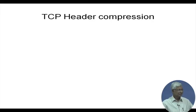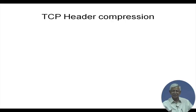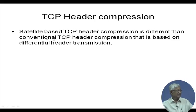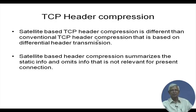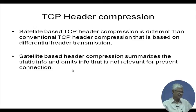Standard TCP header compression uses a delta function — transmitting only the difference between the previous and new header. However, satellite-based TCP header compression is different from this conventional approach. It summarizes static information and omits information not relevant to the present connection, for example replacing long source and destination addresses with shorter unique port identifiers.